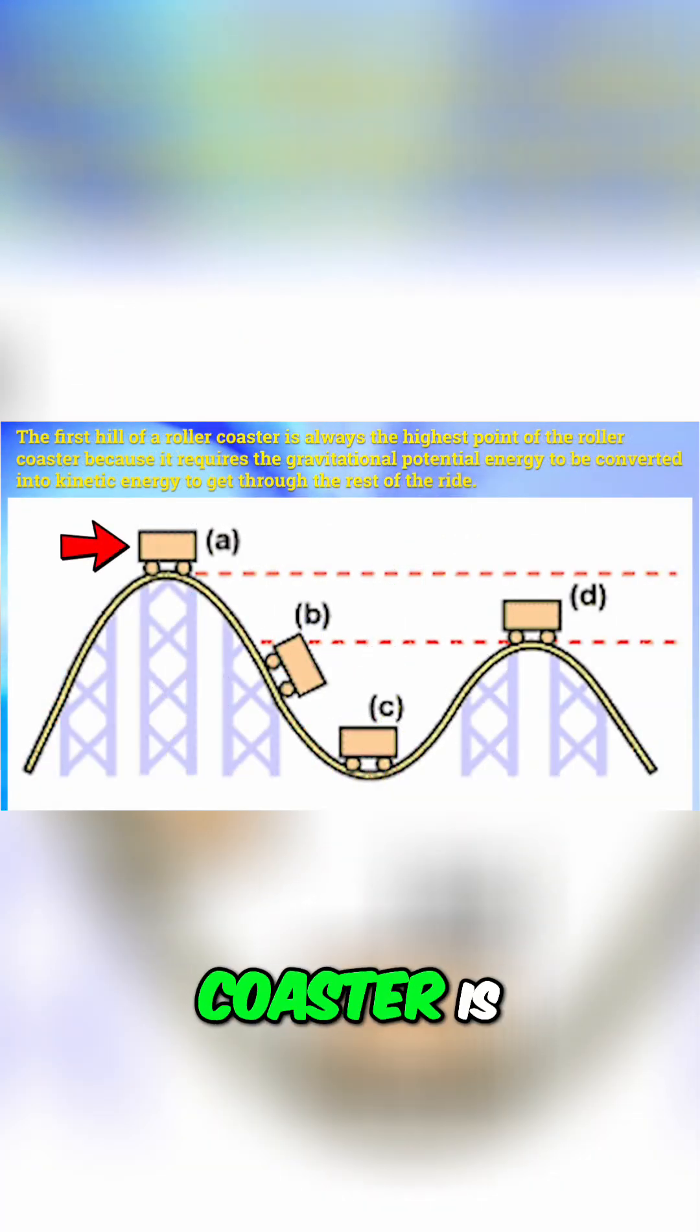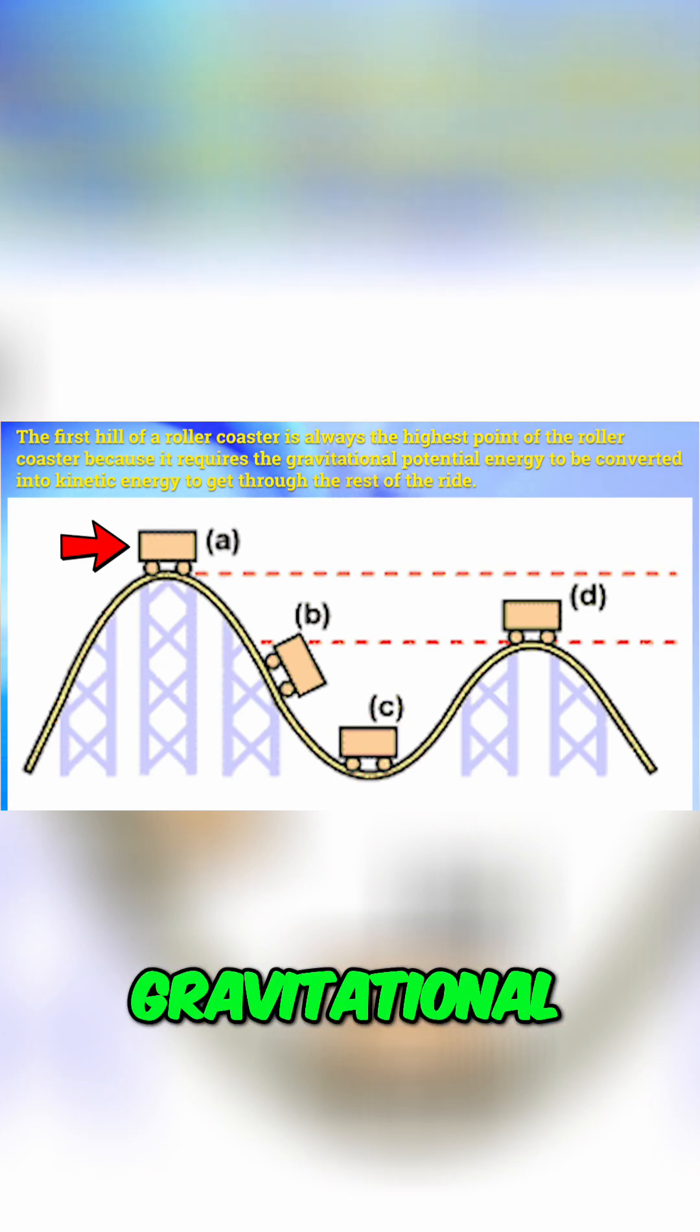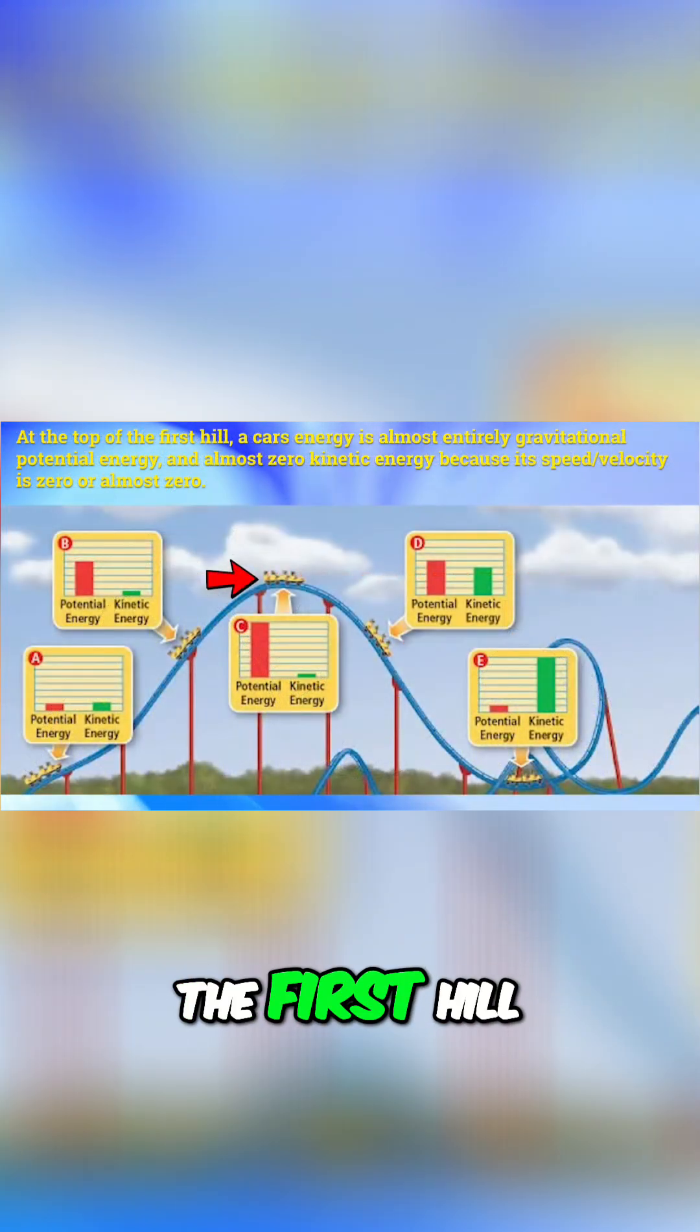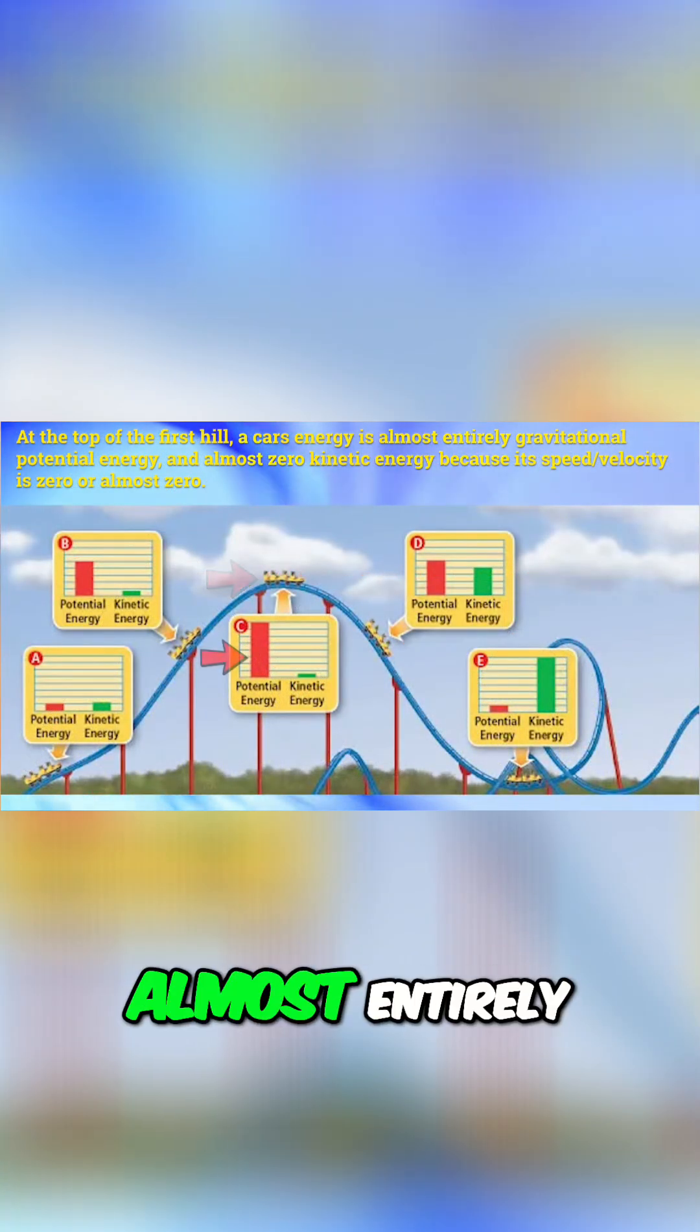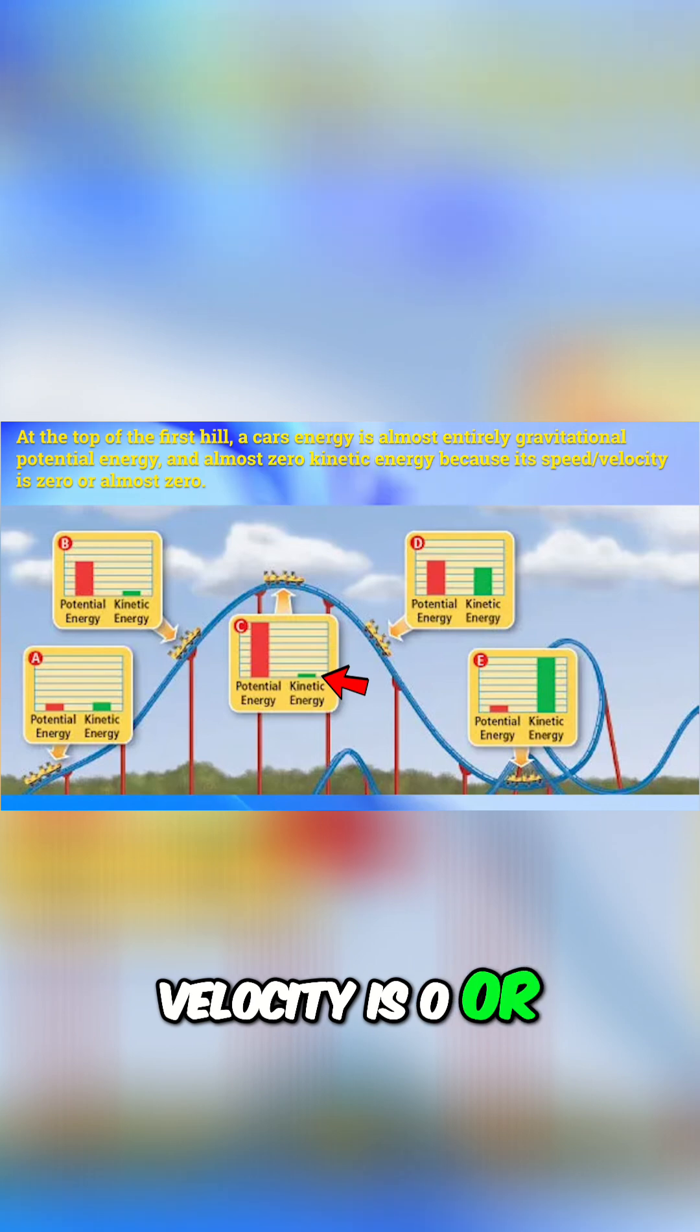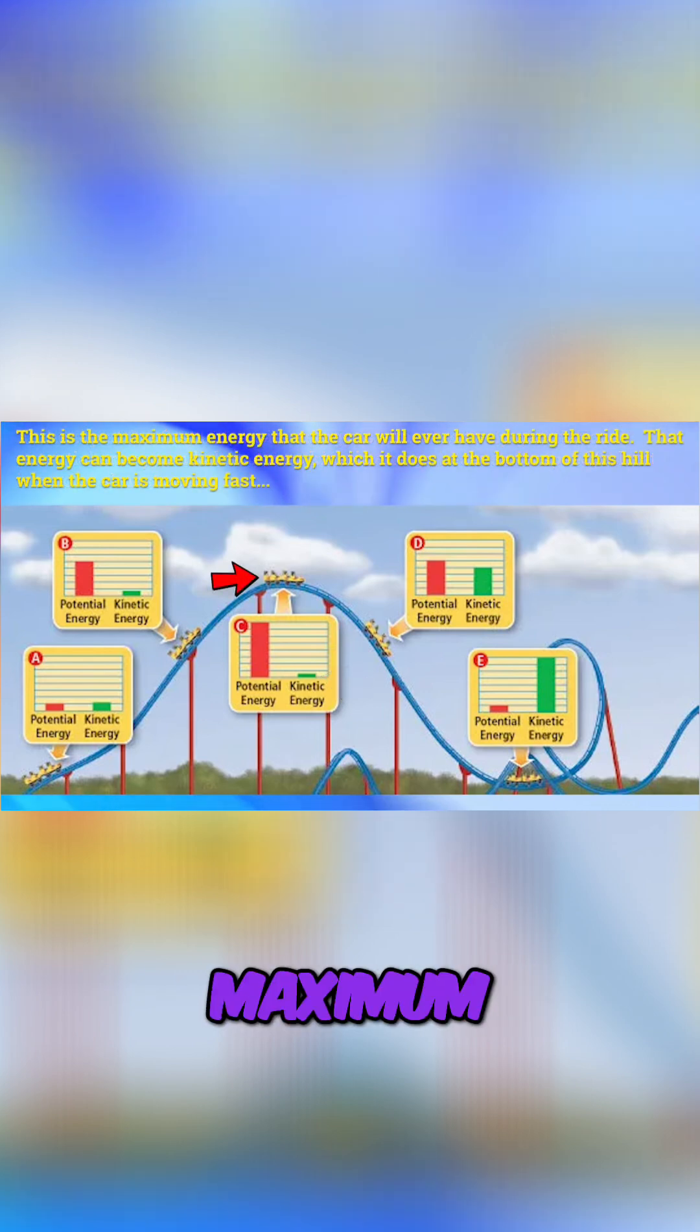The first hill of a roller coaster is always the highest point of the roller coaster because it requires the gravitational potential energy to be converted into kinetic energy to get through the rest of the ride. At the top of the first hill, a car's energy is almost entirely gravitational potential energy and almost zero kinetic energy because its velocity is zero or almost zero. This is the maximum energy that the car will ever have during the ride.